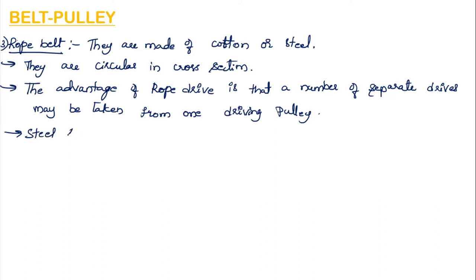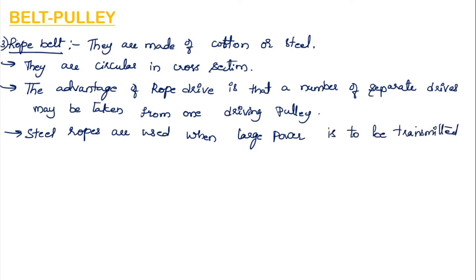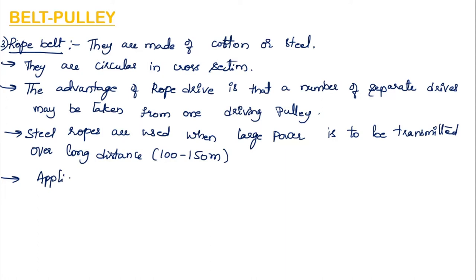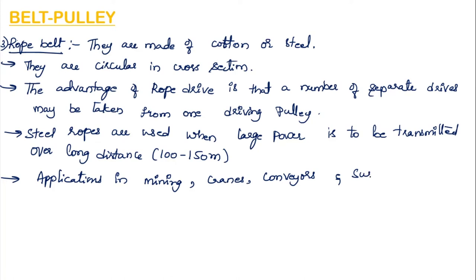Steel rope drives are used when you want to transmit more power over long distances — 100 to 150 meters. Their applications include mining, cranes that lift very heavy weights, conveyors, and suspension bridges.